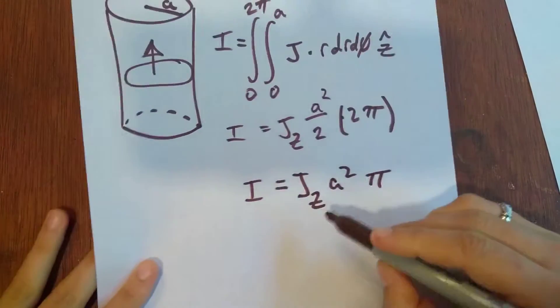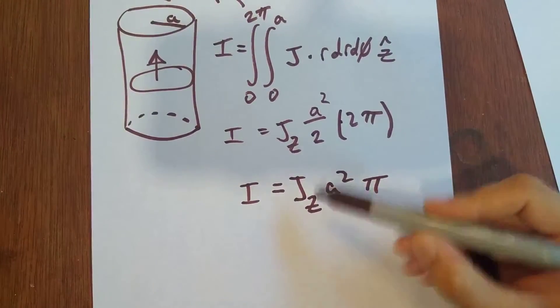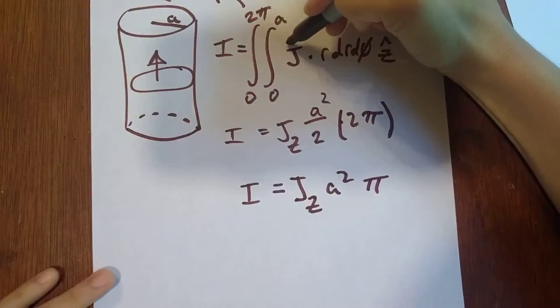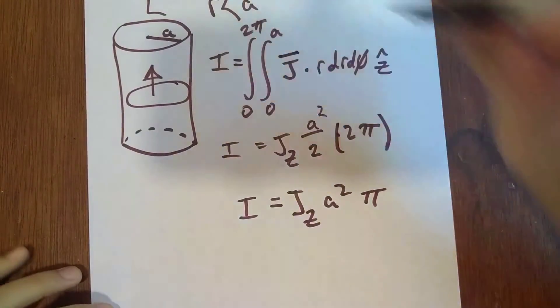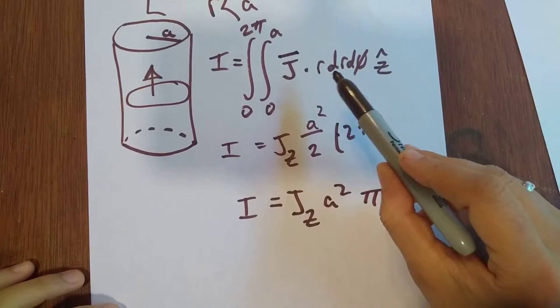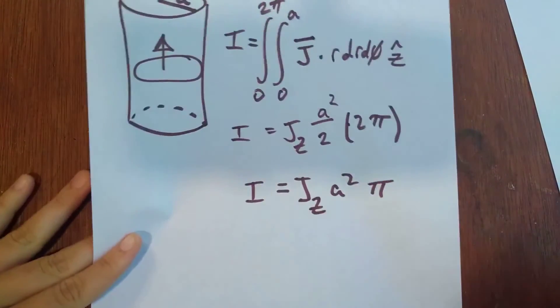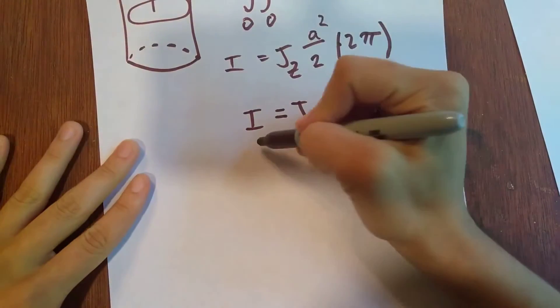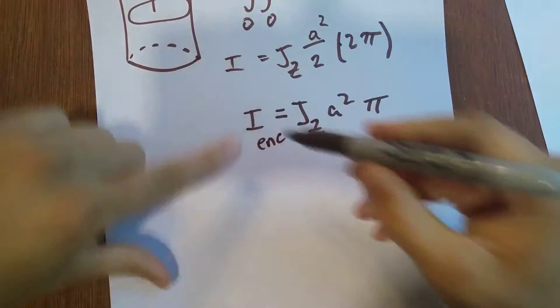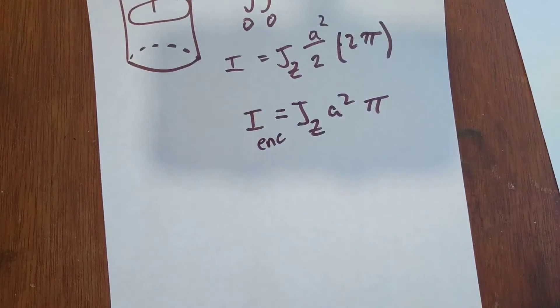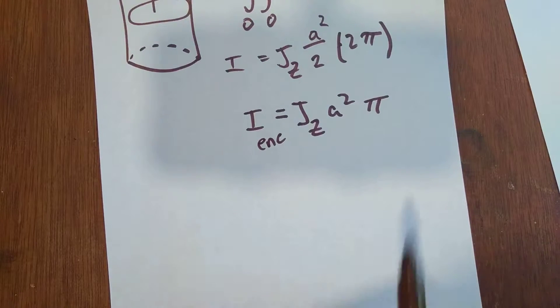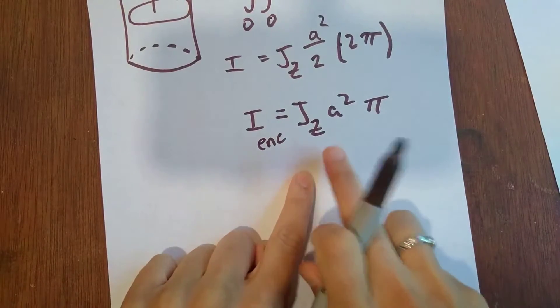And again, this sub Z came from the fact that this is a vector that we're dotting with a unit vector. So we're saying it's only the portion of Z. That's where that sub Z came from. So now we have this... Remember, this I is only the I enclosed. Okay. So then we have this value right here. Let's solve for the J.